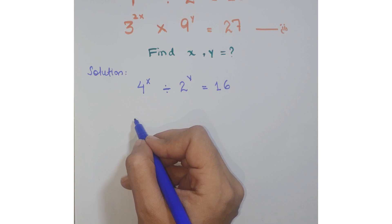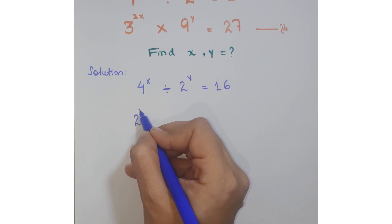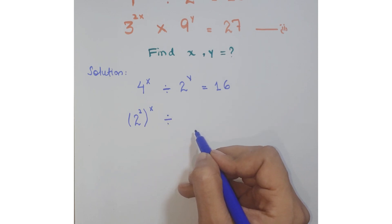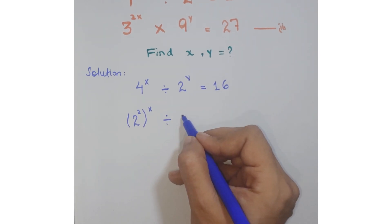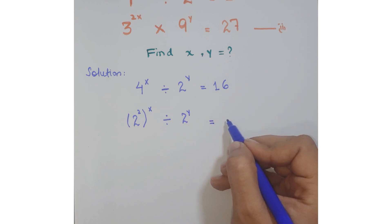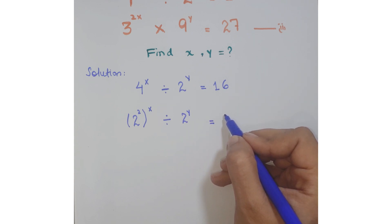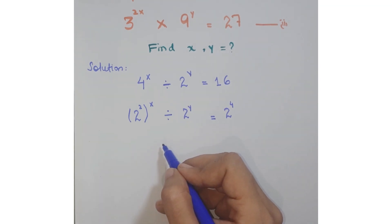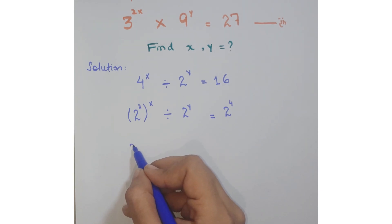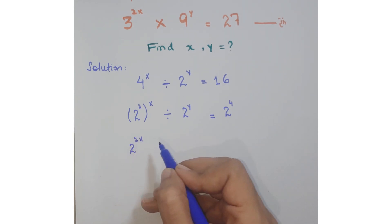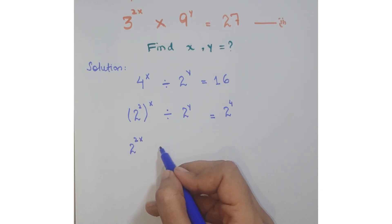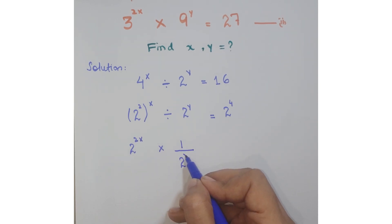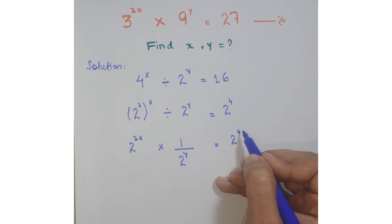As you know, 4 is a perfect square of 2. So you can write it as 2 to the power 2, whole to the power x, divided by 2 to the power y, is equal to 16, which can be written as 2 to the power 4. Now multiply the exponents to get 2 to the power 2x. Then changing the division into multiplication, the next number gets reciprocated, giving 1 upon 2 to the power y, equal to 2 to the power 4.